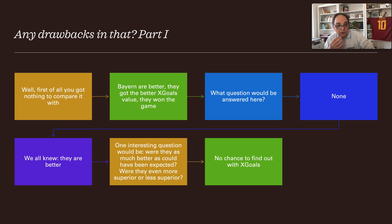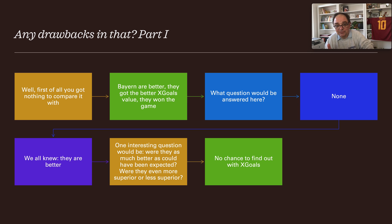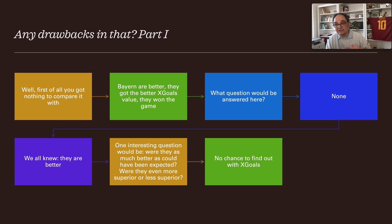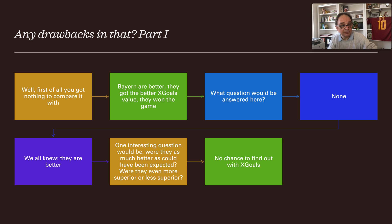First of all, you've got nothing to compare x-goals results with. You get your x-goals results and say Bayern are better — they got a better x-goals value and won the game. But what questions are answered here? None. We all knew they were better and expected them to be. One interesting question would be: were they as much better as expected? Were they even more or less superior? There's no chance to find that out with the x-goals approach.